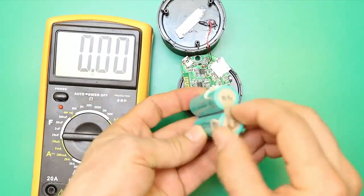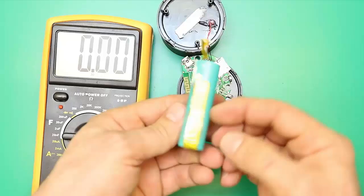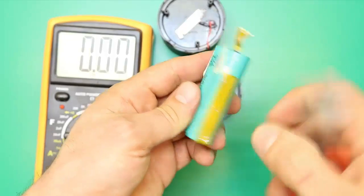These are li-ion batteries from a laptop battery. They are connected in parallel; they will give the same voltage but with double amperage.